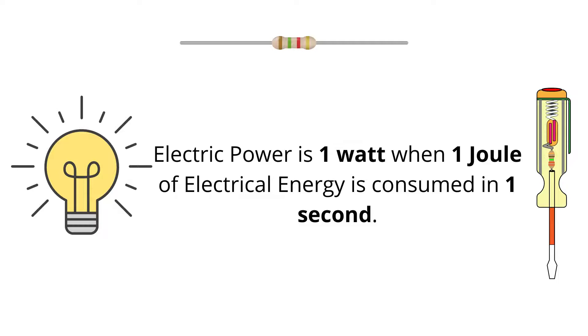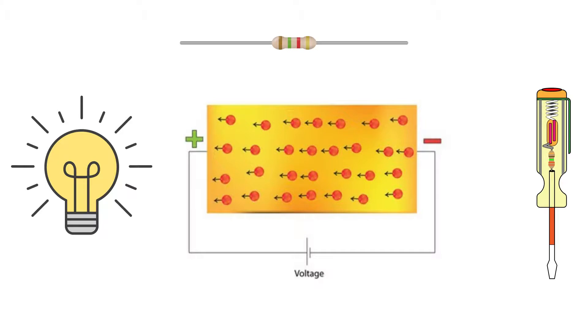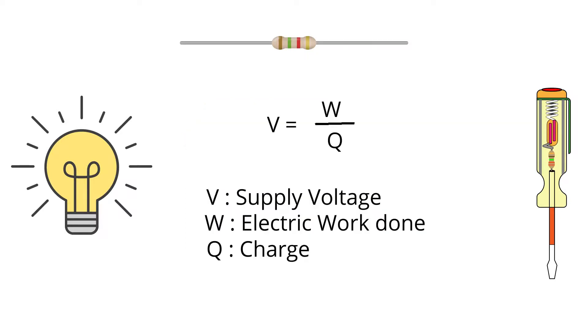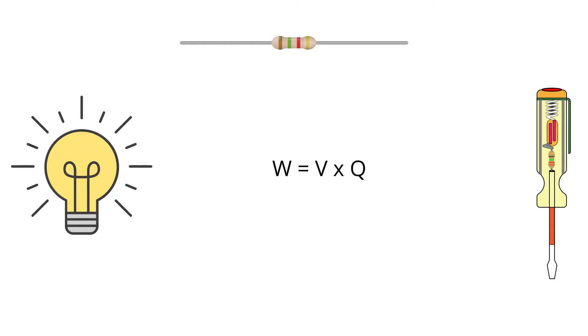Now we already know from our previous topics about voltage and current that voltage is work done to push free electrons in a conductor—that is, voltage is work done per unit charge. If you wish to know more about electrons, charge, or current, then click on the link given in the description below. Okay, now expressing this relation in a mathematical form, we get V equals W divided by Q, where V is the supply voltage, W is the electrical work done, and Q is the charge. Rearranging this equation, we can write W equals V multiplied by Q.